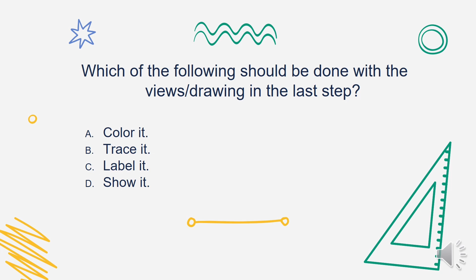Which of the following should be done with the views or drawing in the last step? Is it A. Color it, B. Trace it, C. Label it, or D. Show it? The answer is Letter C. Label it — always label your drawing.